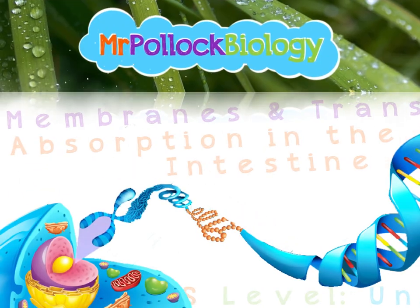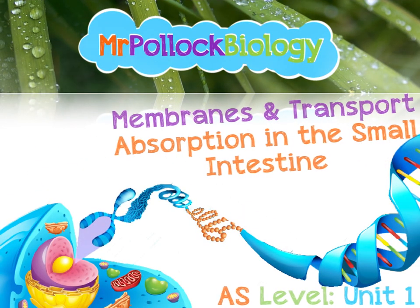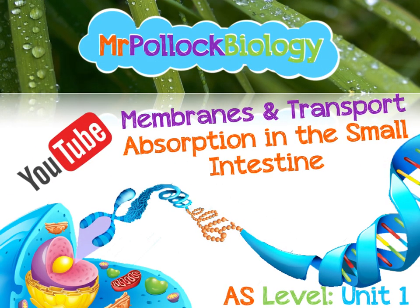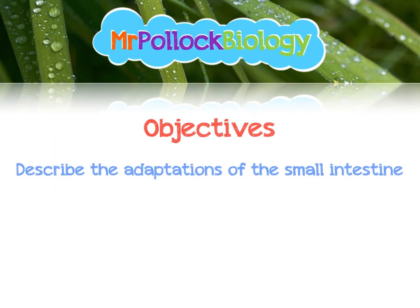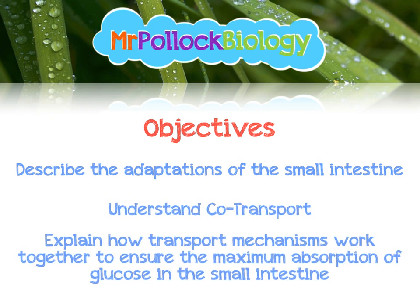Hi guys, it's Mr. Pollock Biology here with another video about AS Level Unit 1. This time we're looking at membranes and transport again, more specifically how absorption occurs in the small intestine. Our objectives today: you're going to describe the adaptations that the small intestine has, understand co-transport, and explain how transport mechanisms work together to ensure the maximum absorption of glucose occurs in the small intestine.